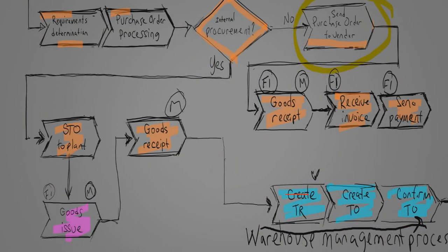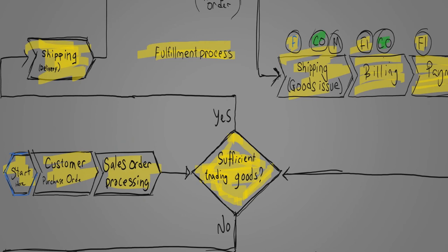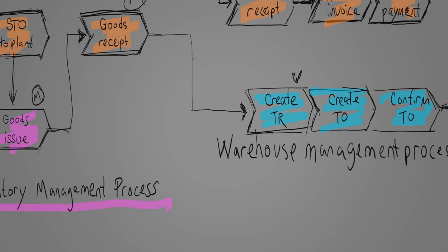...placed in an interim storage area, and a transfer requirement is automatically created by the ERP system, which makes sure everything gets to where it needs to be. When there is enough inventory to fulfill the customer's order, warehouse management ships the mousetraps. Then it's back to the fulfillment department, which bills and receives payment from the customer.